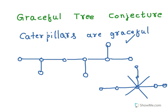Let me repeat the definition of caterpillars. Caterpillars have one long path and every vertex is either on that path or at a distance of at most one from that path. Try to prove that caterpillars are graceful.